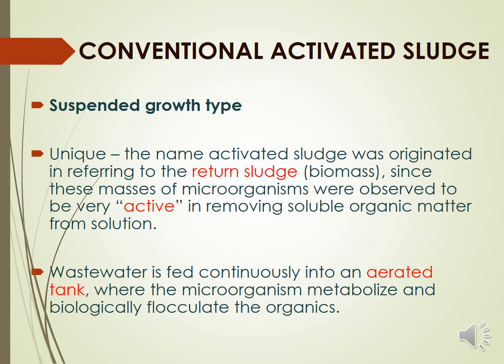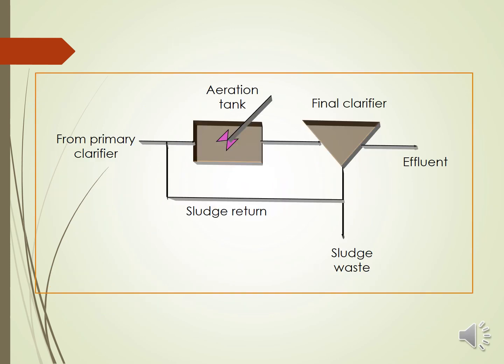The name 'activated' comes from the sludge that is returned to the aeration tank from the secondary clarifier. The system has two main components: the aeration tank and the secondary clarifier. This diagram shows both components — the aeration tank, the final clarifier, and the line where sludge is returned to the aeration tank.